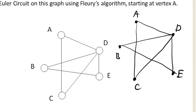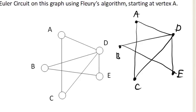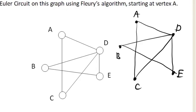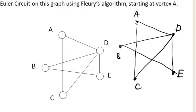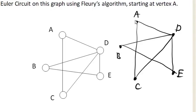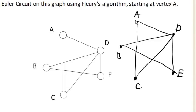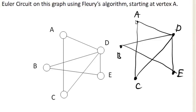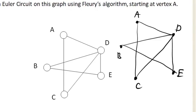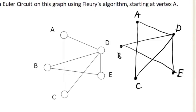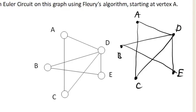The way it works is we pick a starting point. So we pick any vertex that we want to start at, and we choose one of the edges that is leaving our current vertex. And we can pick any edge we want as long as it doesn't separate or disconnect the graph.